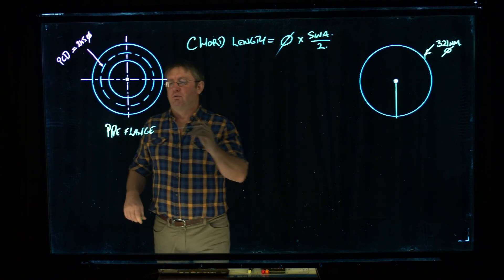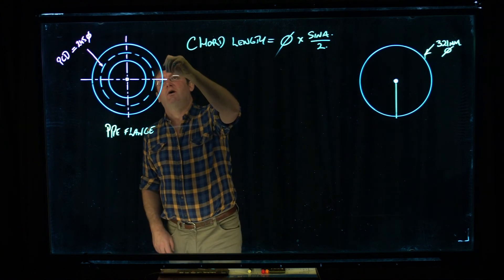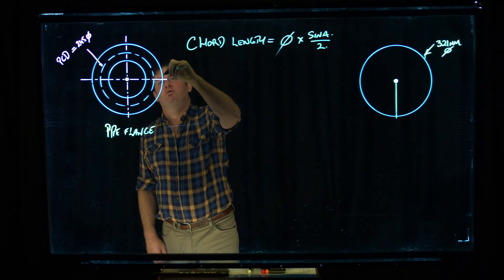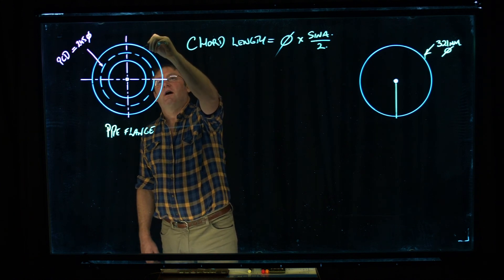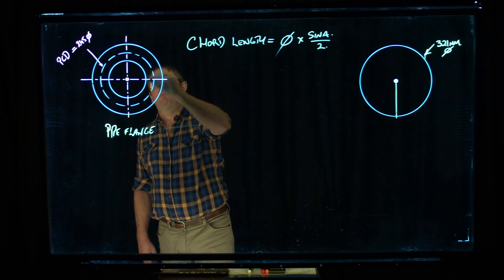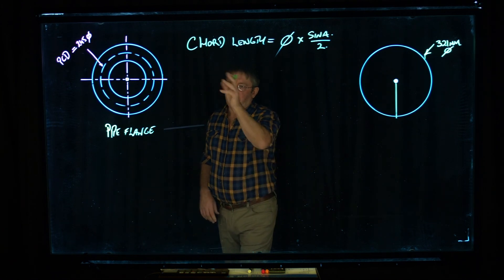A chord length is when you take a line across a circle. It's just a straight line across a circle between two points. Fixing a point, running a straight line across, and that gives you a chord length across a circle. You can run it back to get an angle on a circle.